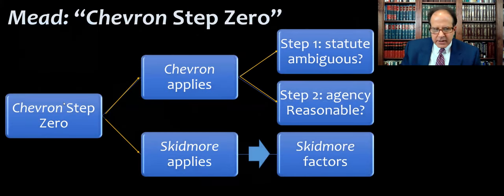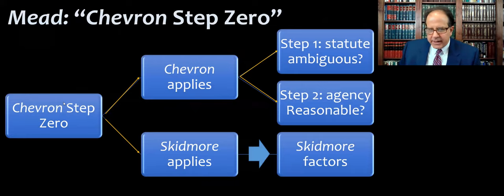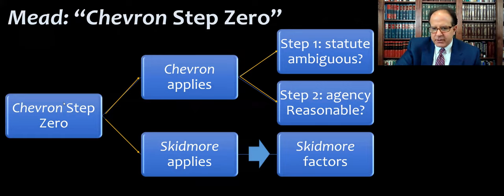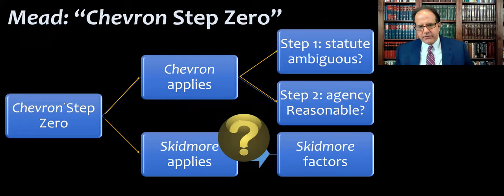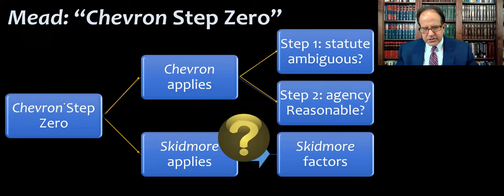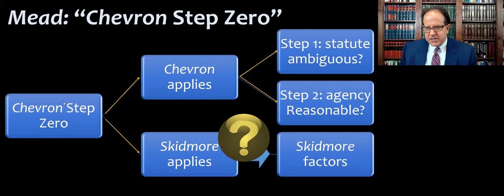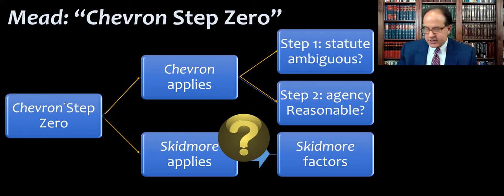To recap: what do we mean by Chevron step zero? Either Chevron applies or it doesn't. If it doesn't, normally Skidmore would apply. If it does apply, then we ask: is the statute ambiguous, and is the agency's interpretation reasonable? If Skidmore applies, we go to the Skidmore factors. The problem here is they don't really acknowledge that they're going to Skidmore — they never go through the Skidmore factors. And the other weird thing is the court ends up reaching the same interpretation as the agency. Roberts says we're not following Chevron, then says the statute is ambiguous, and then comes up with his own interpretation, which is basically exactly what the agency was saying.